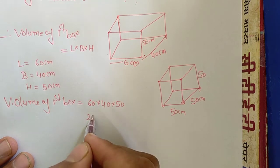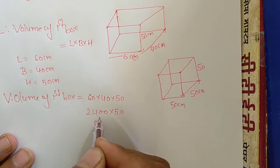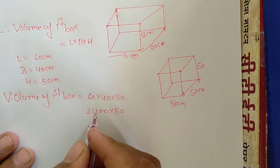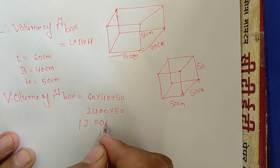60 into 40 is 2400, into 50. Calculating: 2400 times 50 equals 120,000 cm cube.